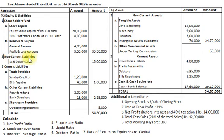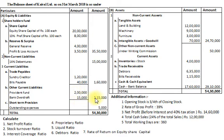Non-Current Liabilities: 14% debentures Rs. 15,00,000. Current Liabilities — Trade Payables: Sundry creditors Rs. 1,20,000; Bills payable Rs. 40,000; total Rs. 1,60,000. Other Current Liabilities: Provident fund Rs. 2,00,000; Bank overdraft Rs. 15,000; total Rs. 2,15,000. Short Term Provisions — Outstanding expenses Rs. 5,000. Grand total Rs. 54,30,000.